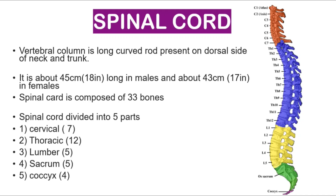The spinal cord is composed of 33 bones, divided into five sections: cervical spine with seven bones, thoracic, lumbar, sacrum, and coccyx.